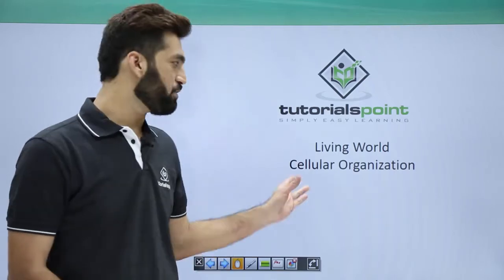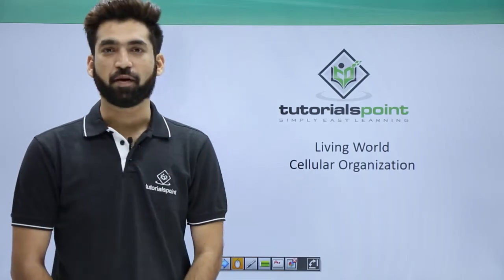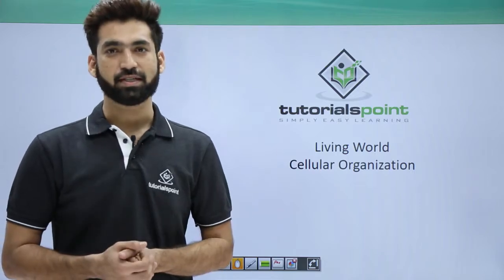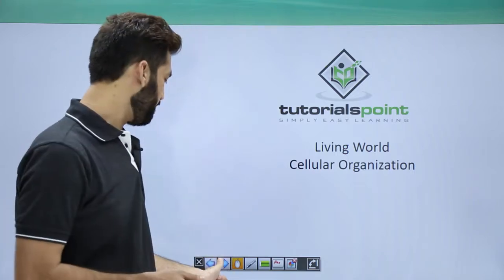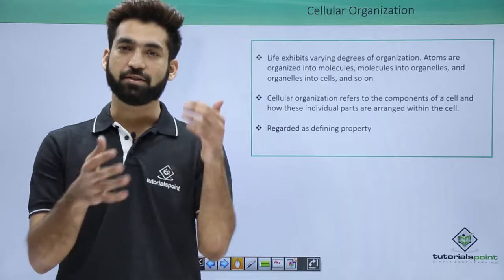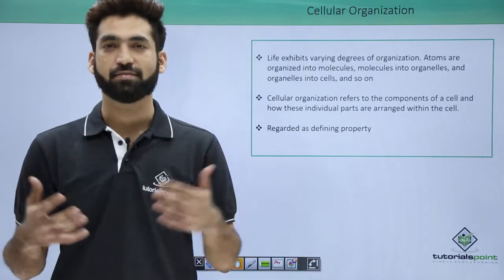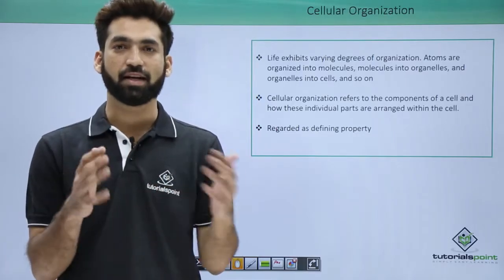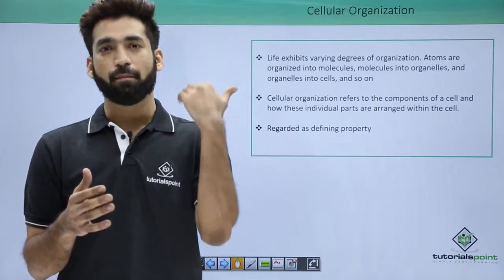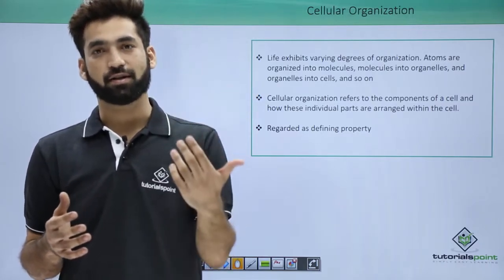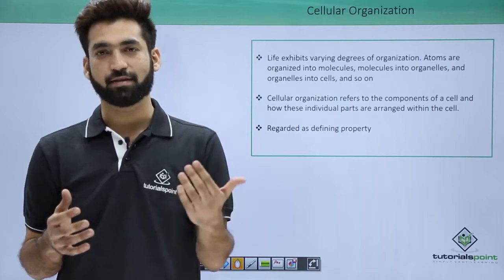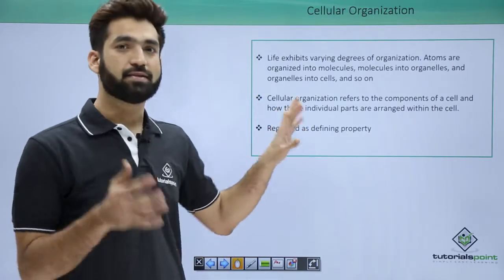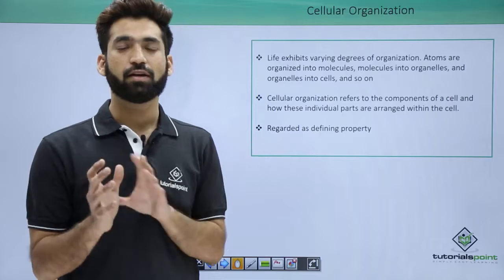In this session we'll be talking about the fifth property called cellular organization, which is found among the living properties. When we talk about cellular organization, we need to see the hierarchy the organism is made of. As you may know from earlier classes, cells make tissues, tissues make organs, organs make organ systems, and so on the organism is made.